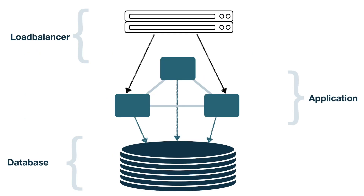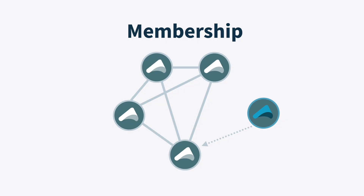All of this sounds great, but what do we actually need to build this type of intelligence into our application layer? That's where a technology like Akka Cluster comes into play. The first thing we need if we're going to build this type of functionality into the application layer is the concept of membership. We need nodes to be able to group together and to know about each other, and that is the core of Akka Cluster.